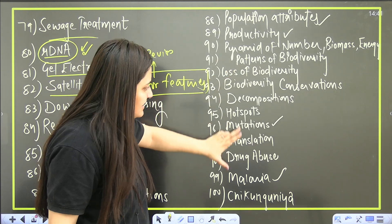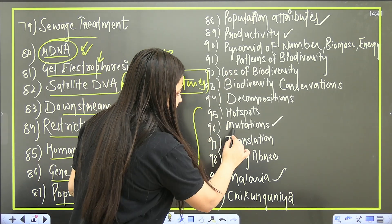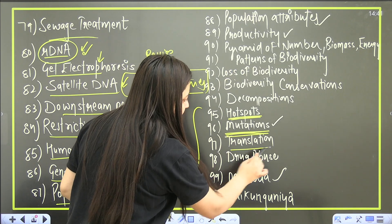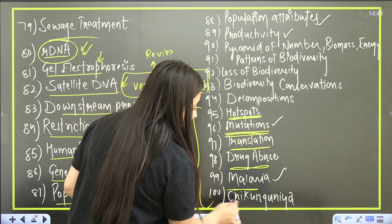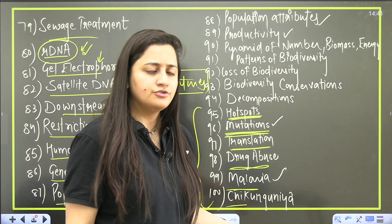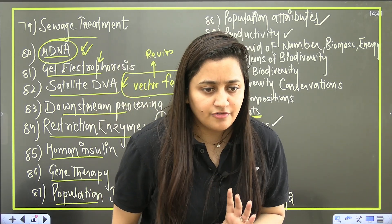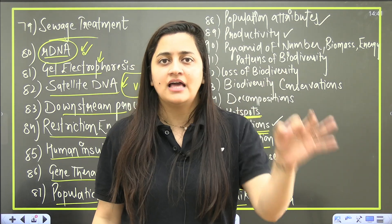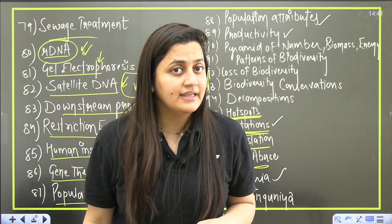This is the list I have provided you. I separately mentioned mutations, hotspots, translation, drug abuse, malaria and chikungunya. Chikungunya is a new topic - then one question will be there from the chikungunya. So this is the list. You will get this list in our telegram group, in our official telegram group. In the description box you will get the link for it.